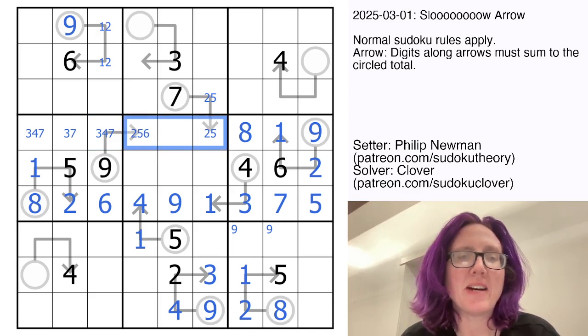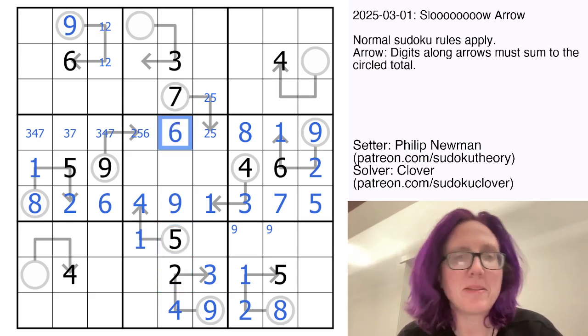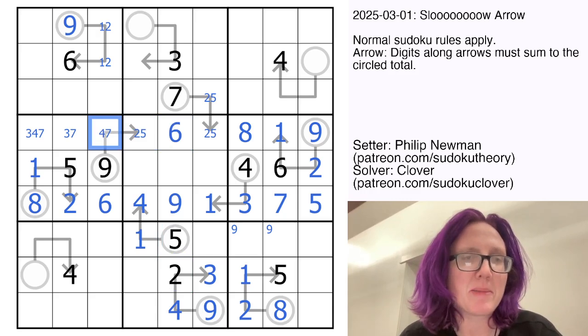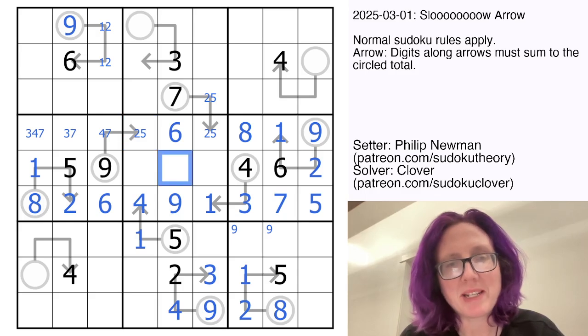So these three digits are going to have to be two, five, six, but because we have a two and five in this column already, that one is going to be a six. So that's not a six, meaning this is not a three, but that doesn't quite settle it yet, so we'll get back to that in a little bit.